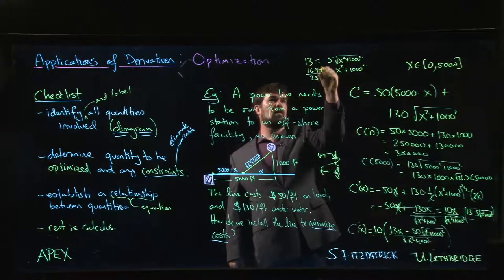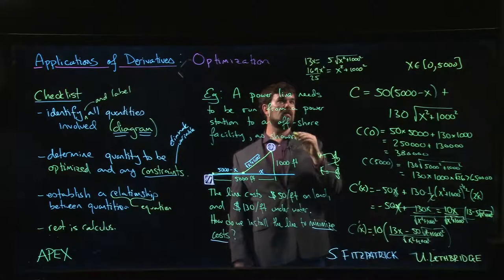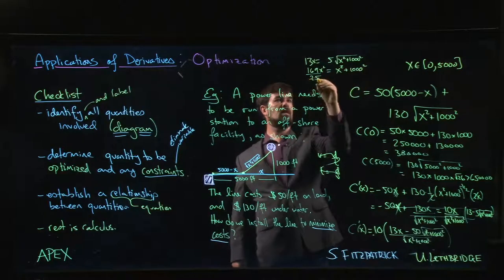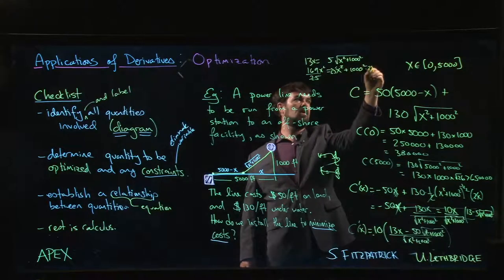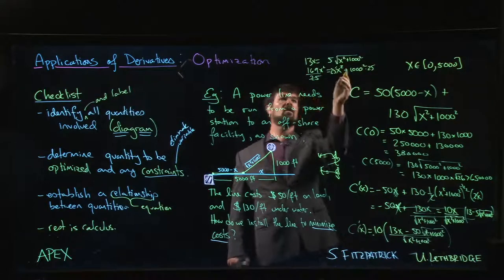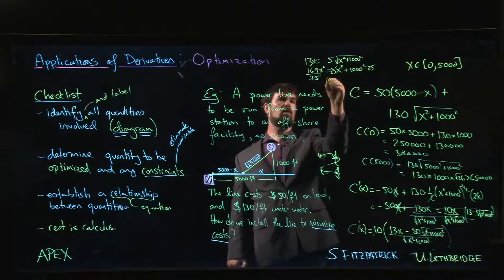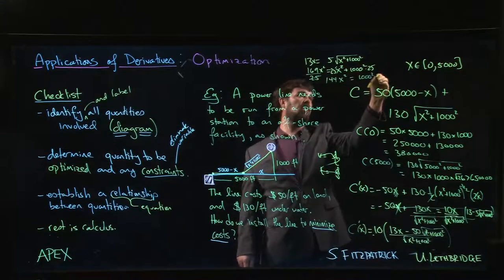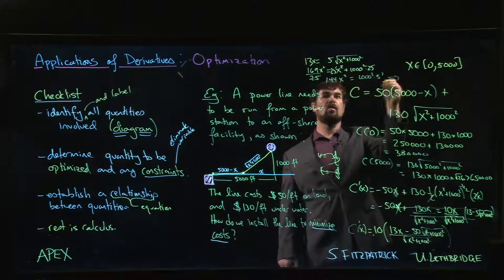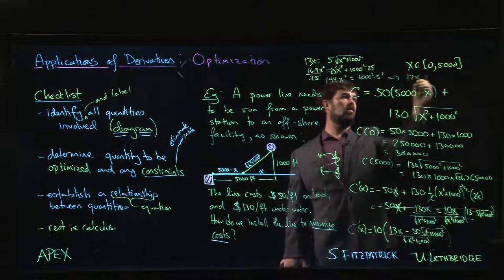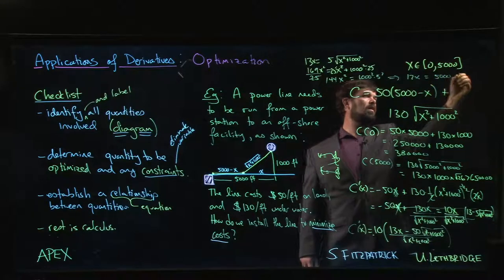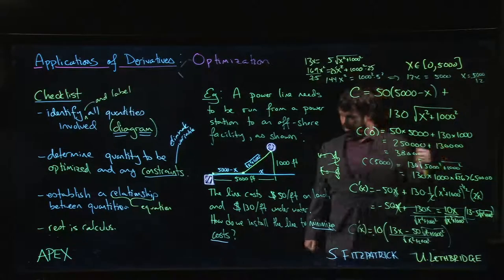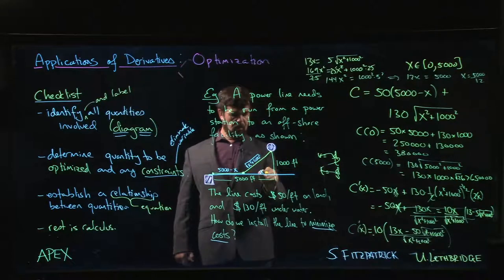Continuing the algebra: 144x² = 25 × 1000², taking square roots gives 12x = 5000, so x = 5000/12. This means the power line should enter the water at a point that is 5000/12 feet from the closest point on shore — about one twelfth of the total shore distance.